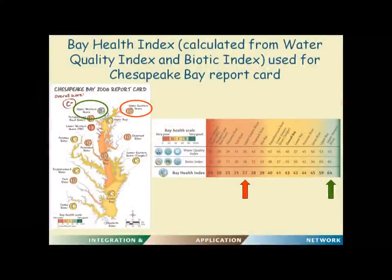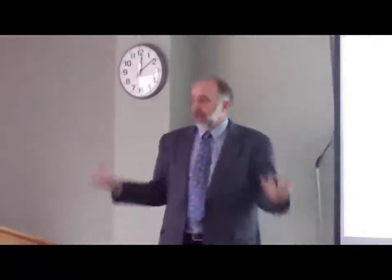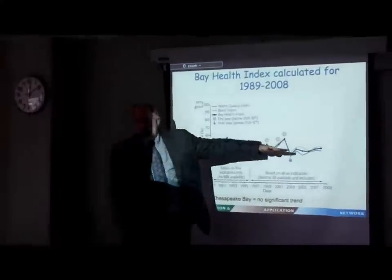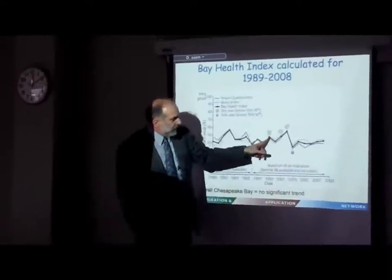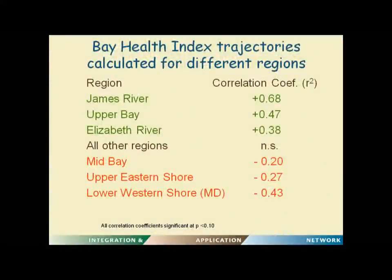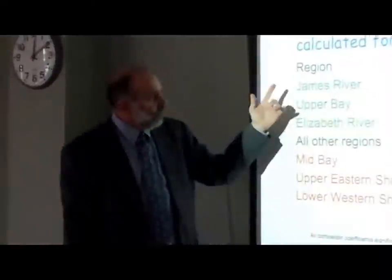This was somewhat perplexing, but because we established indicators that the Chesapeake Bay Program had been collecting for over 20 years, we could back-calculate those assessments. When we did that on the Bay-wide scale, we see no major trajectory — it's pretty much going up and down. Dry years and wet years clearly influence the overall rankings, but there was no specific trajectory for the Bay as a whole. However, when we started to look at trajectories of individual regions, most didn't have a significant trajectory, but several did.